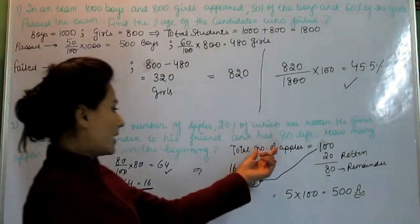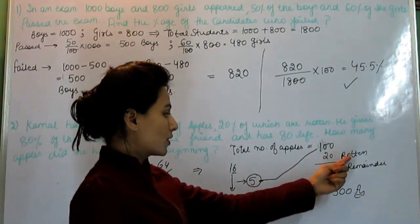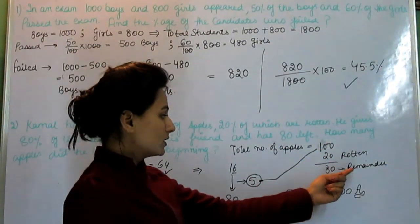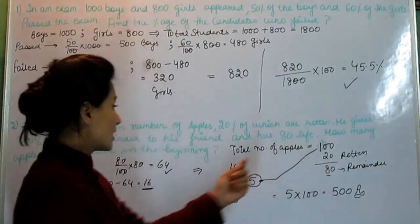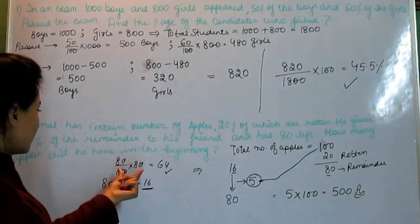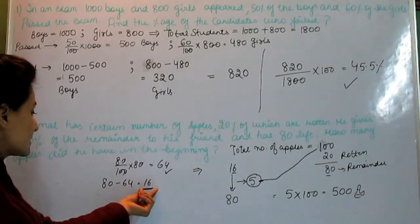Total number of apples we let 100, 20% of those are rotten, we are left with 80. This is remainder. He gives 80% of the remainder to his friend, he has given 64. Now he has left with 16, but given is that he has left with 80. So 80 is 5 times of 16, we multiply this 5 with 100. The answer is 500.